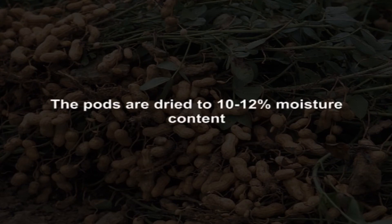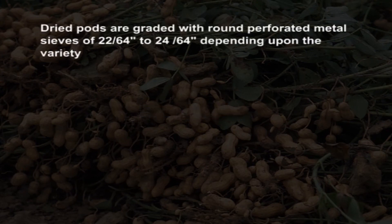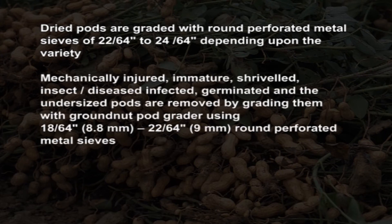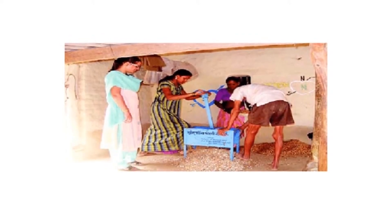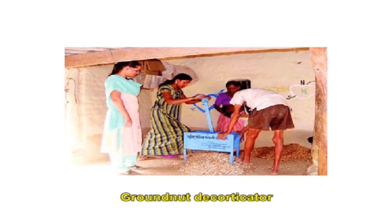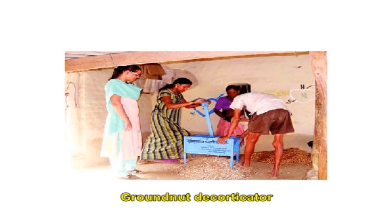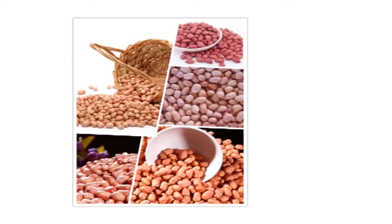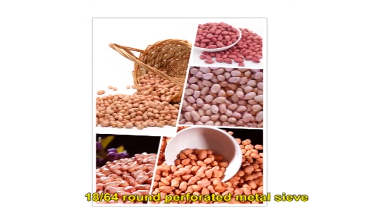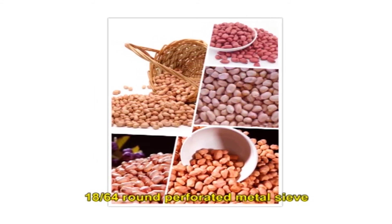The pods are dried to 10 to 12 percent moisture content. Dried pods are graded with round perforated metal sieves of 22/64 inch to 24/64 inch depending upon the variety. Mechanically injured, immature, shrivelled, insect- or disease-infected, germinated and undersized pods are removed by grading using a groundnut pod grader with 18/64 inch and 22/64 inch round perforated metal sieves. The pods are decorticated before sowing using a groundnut decorticator; moisture content at decortication is 16 percent. The seeds obtained from decortication should be graded using an 18/64 inch round perforated metal sieve to remove shrivelled and undersized seeds.